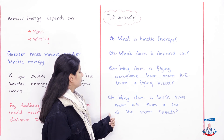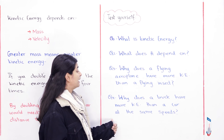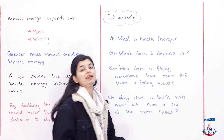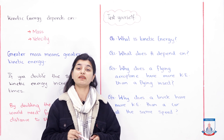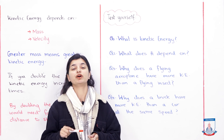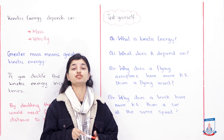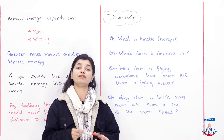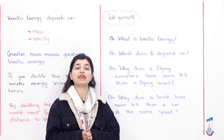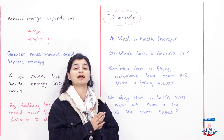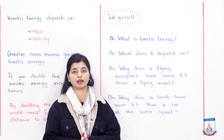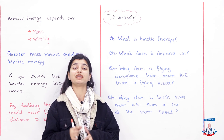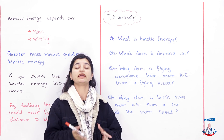Question 4: Why does a truck have more kinetic energy than a car at the same speed? Because the mass is directly proportional to kinetic energy — the more the mass, the greater the kinetic energy. Since the truck has more mass than the car, the truck's kinetic energy will be more, even at the same speed. With that, we have covered the sub-topic and understand kinetic energy — how it is defined and what it depends on.